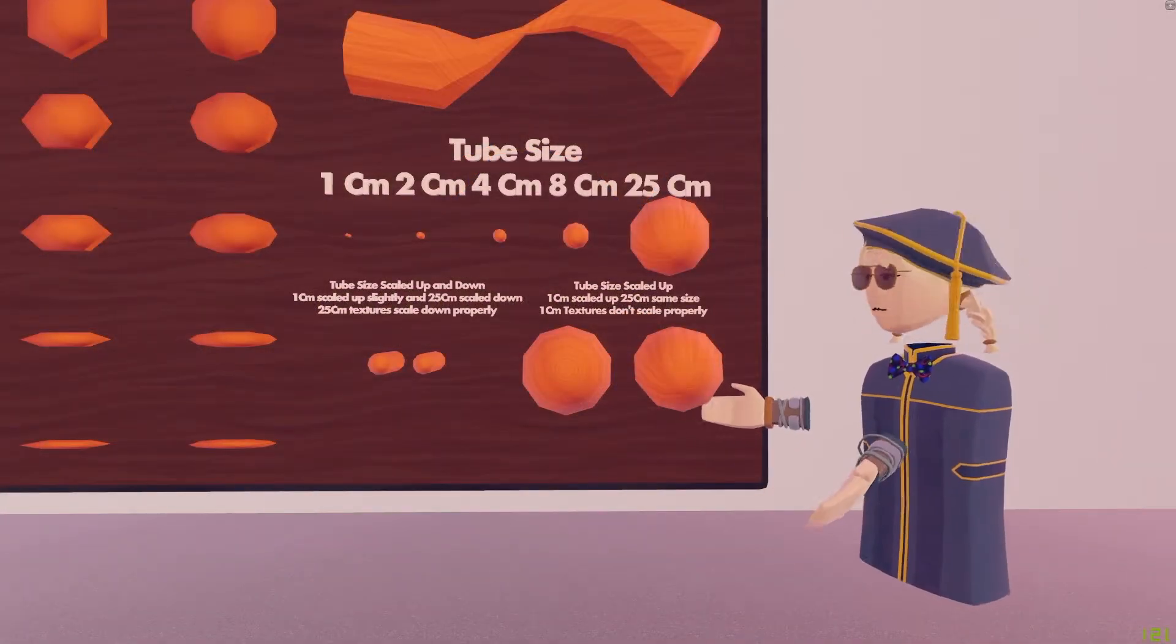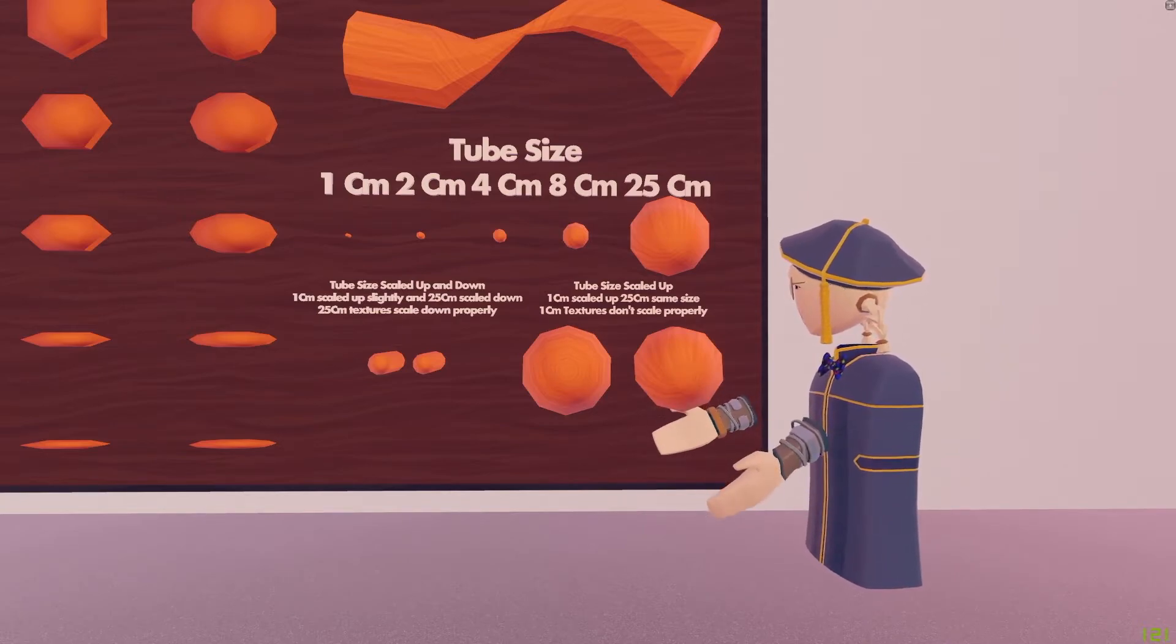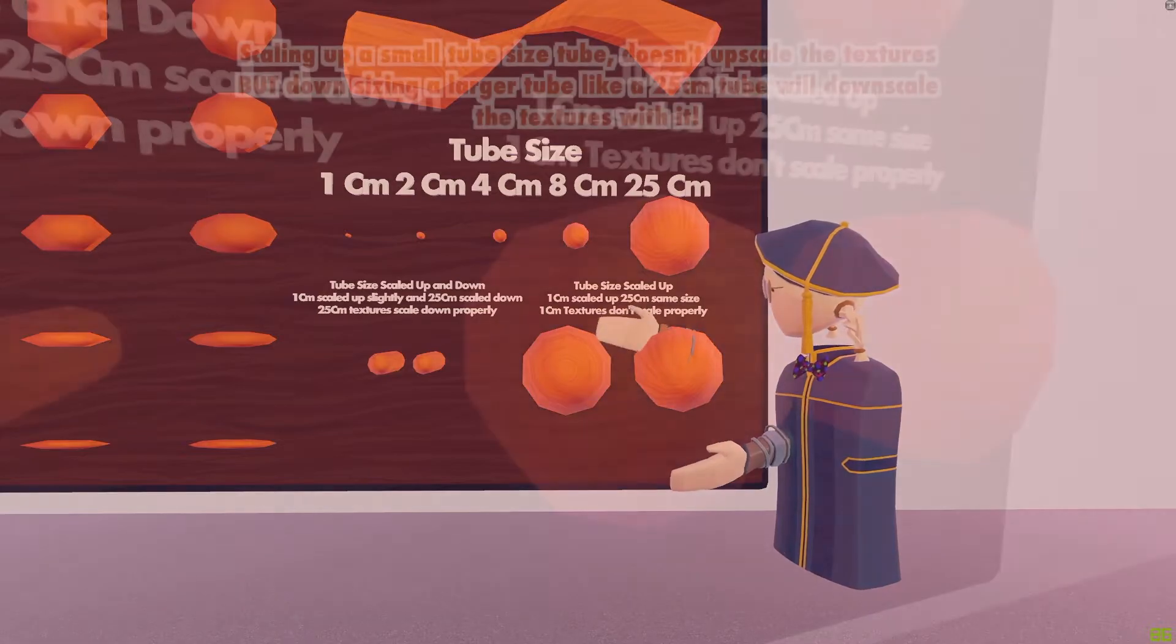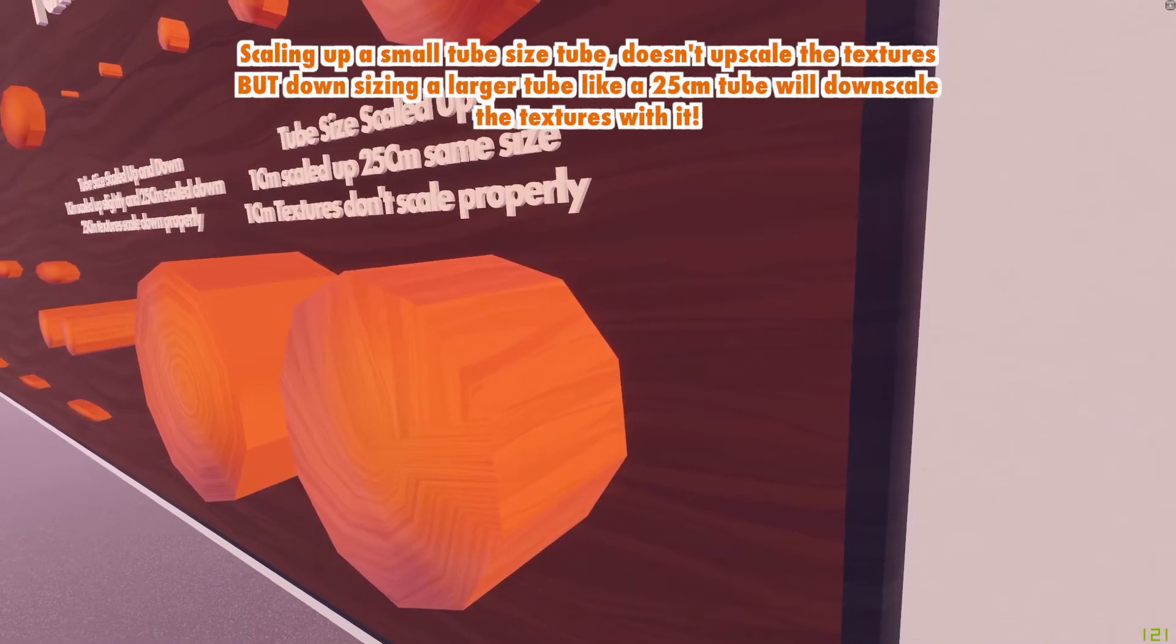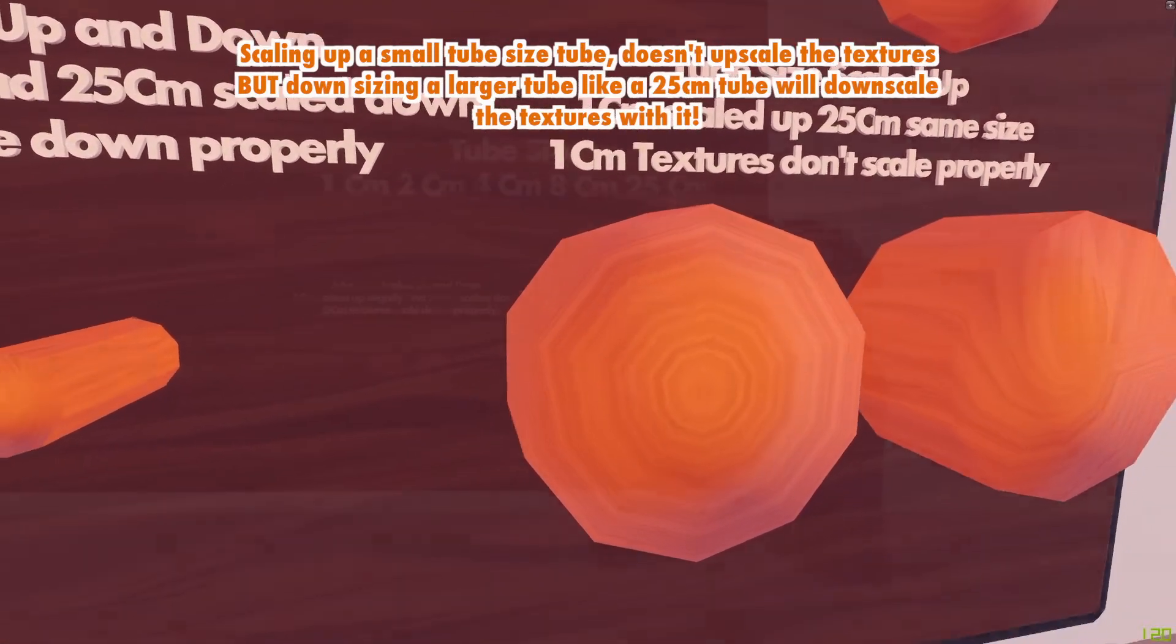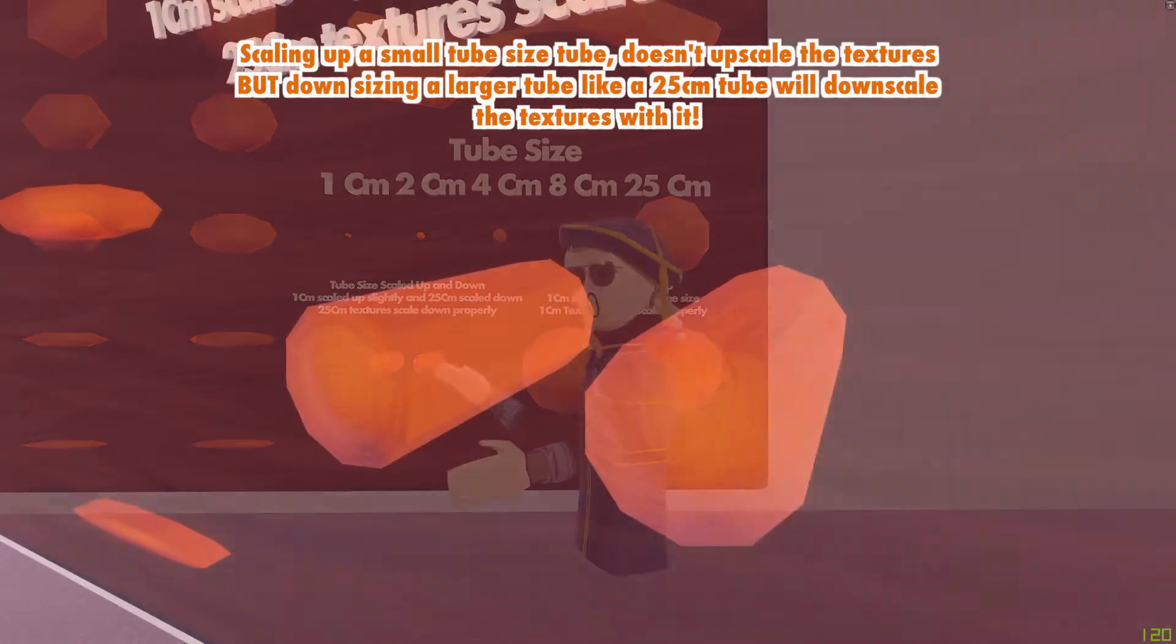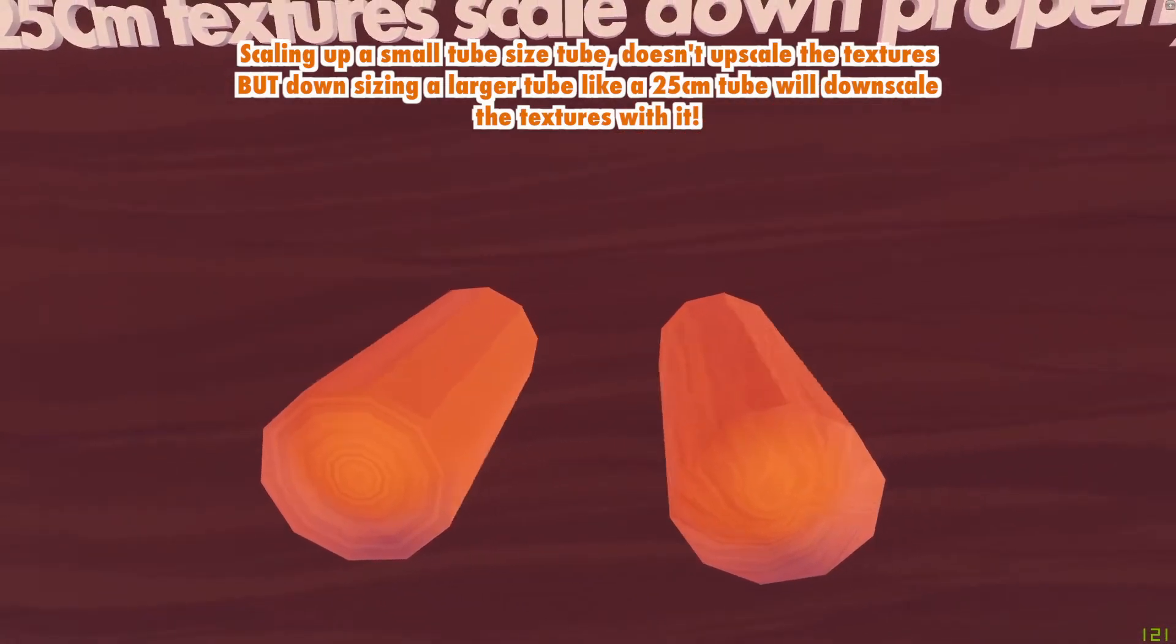Lastly, when you scale up the smaller tube sizes, it doesn't 100% scale up the textures. Over here, we have a one centimeter texture scaled up to size 25. When you look at this, it doesn't look the same. But it isn't true when you go the other way around. We scaled down the 25 centimeter tube and the texture scales properly with it.